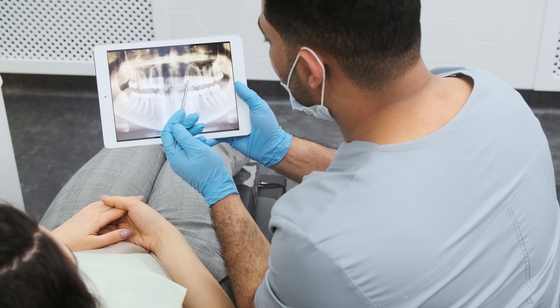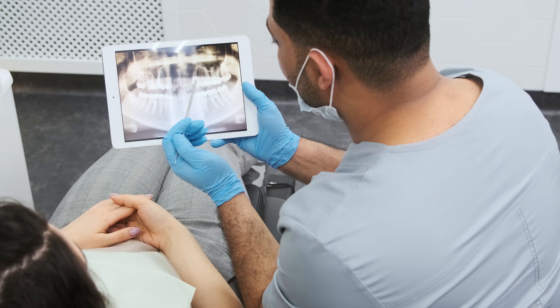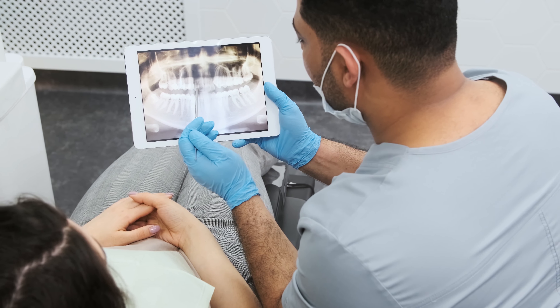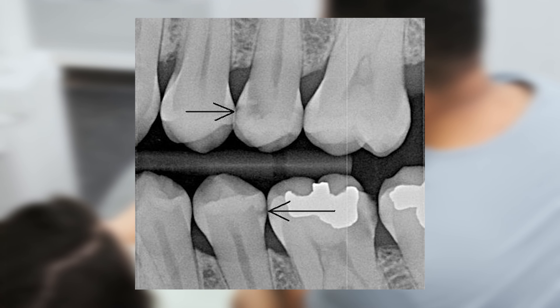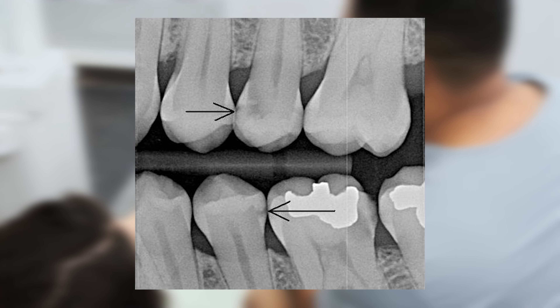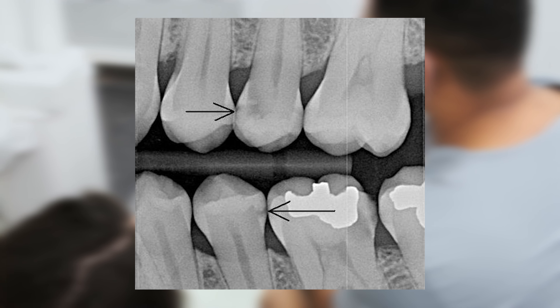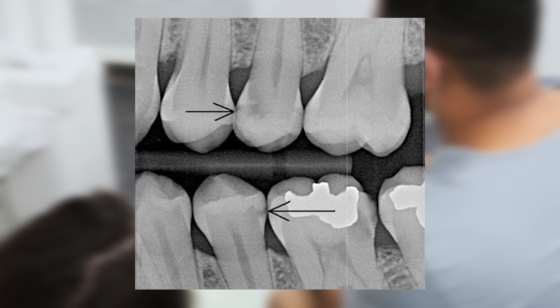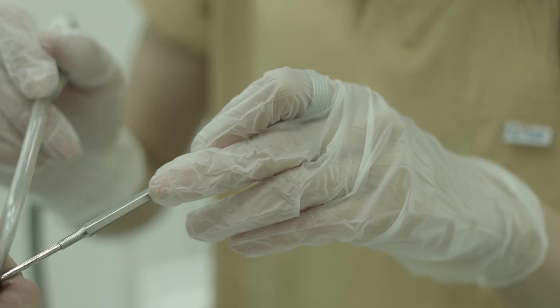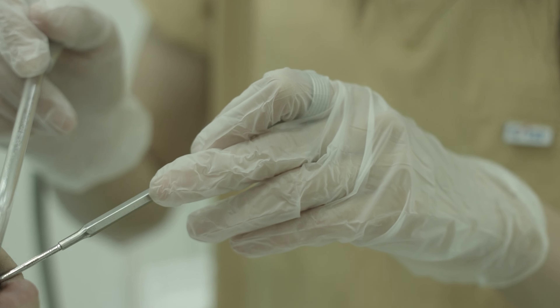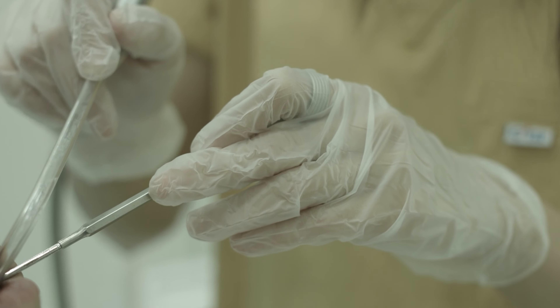If the demineralization progresses far enough, it shows up as dark spots on an x-ray, and in the mouth it can become dark and sticky to sharp objects. We as dentists can diagnose them with a small instrument called an explorer. Now that you know the process, let me explain what increases and decreases your chances of getting a cavity.